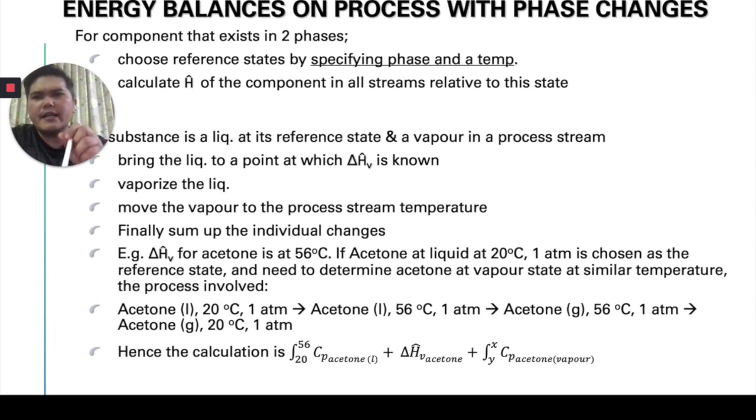In this case, where we want to choose, what is very important for us, in order for us to solve this problem, we really need to choose what will be our reference state. The reference state is actually by specifying what will be the phase as the temperature. And then we need to calculate all the enthalpy, specific enthalpy for all the component in all stream relative to this particular state. We have to choose this particular state. This is our reference state. The value at that reference state is ultimately is zero, the enthalpy. But then we have to calculate, in order for us to calculate the changes with respect to that, we must calculate with respect to the reference state that we have chosen.